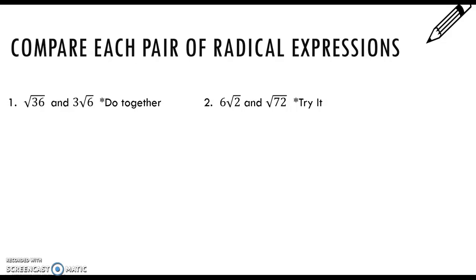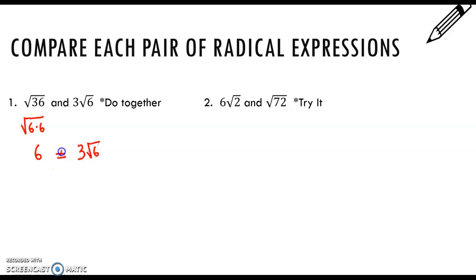One of the things you'll be asked to do on homework is comparing radical expressions — are they the same or are they not the same? The square root of 36 would be 6, since 36 is 6 times 6. And 3 times the square root of 6 is not equal to 6. Which one's bigger?